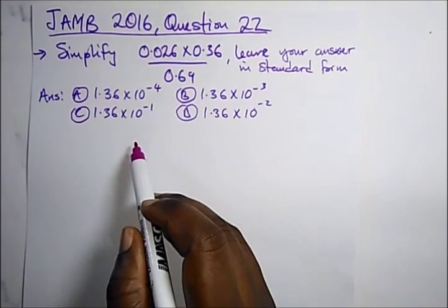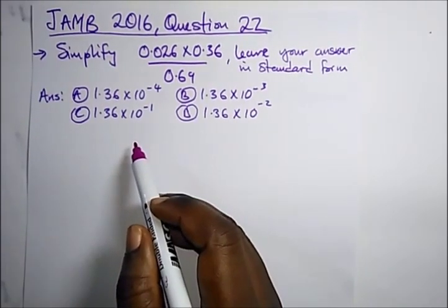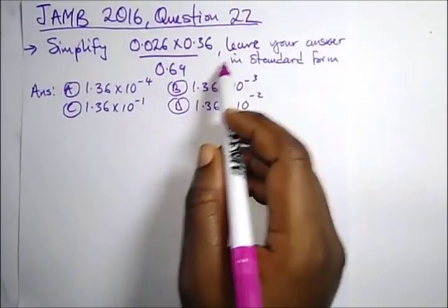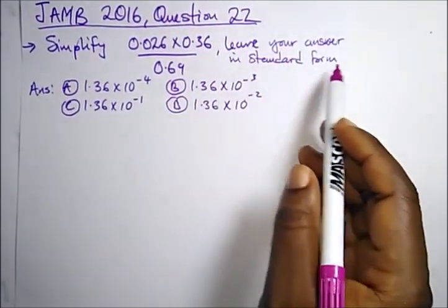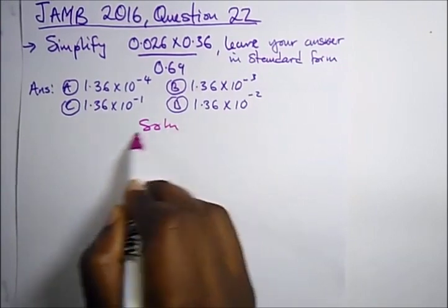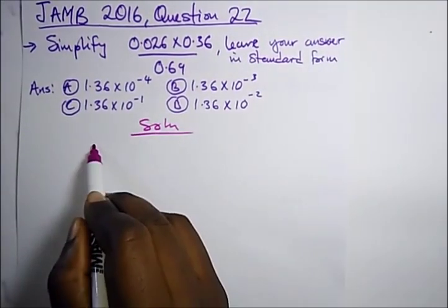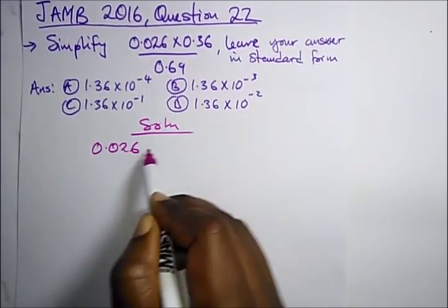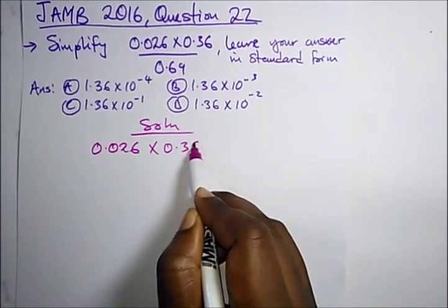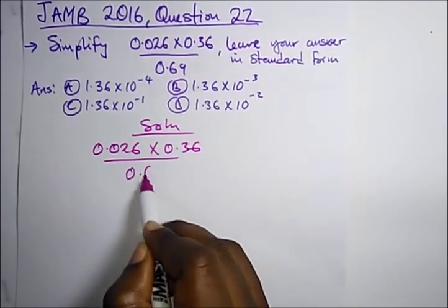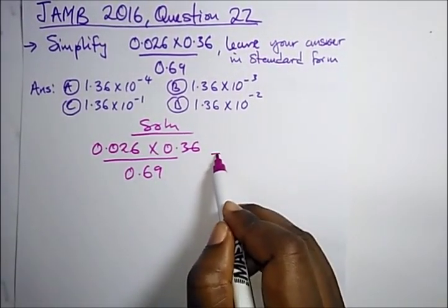Here we have a question from JAMB 2016, question 22. It says: simplify and leave your answer in standard form. We have 0.026 times 0.36, divided by 0.69. Let's solve this together.